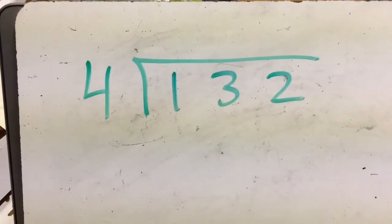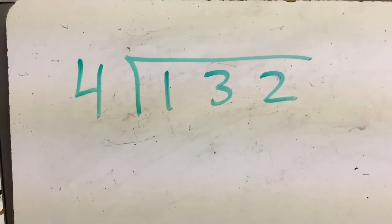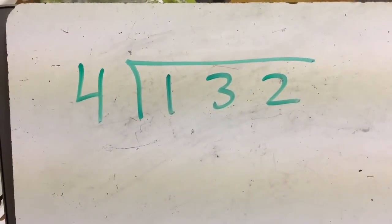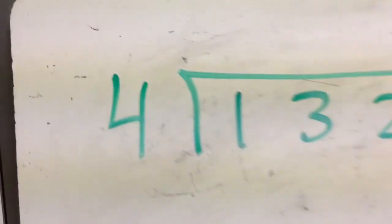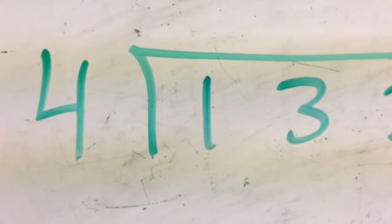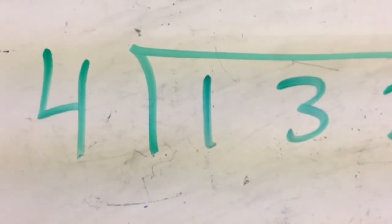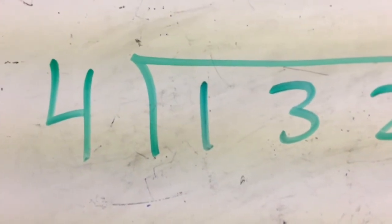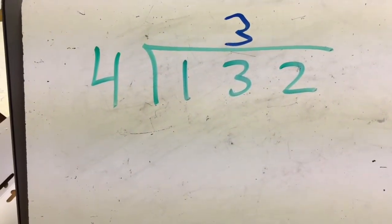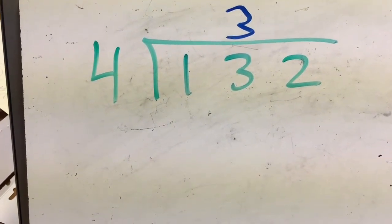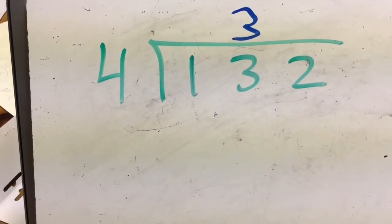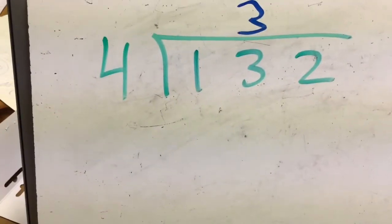Let's do another one with no remainder. How many fours are in 132? How many groups of four would be in 132? First question: will four go into one? Can I get a group of four out of one? No. Next question: 13 — can I get groups of four out of 13? Yes. How many? I think I can get three full groups of four out of thirteen, so I put three above the three.